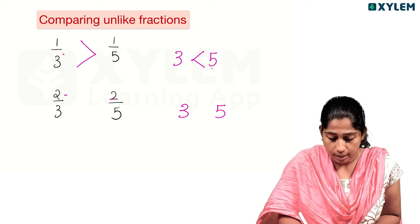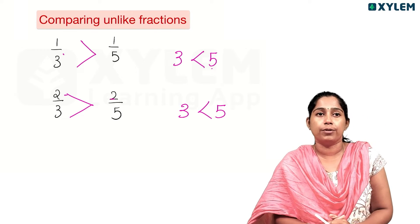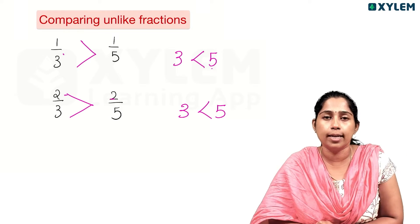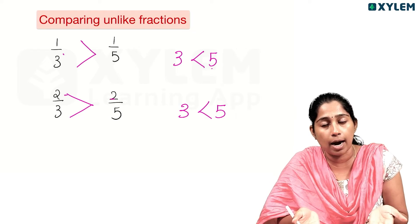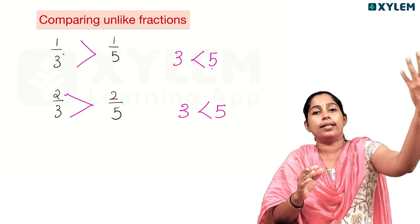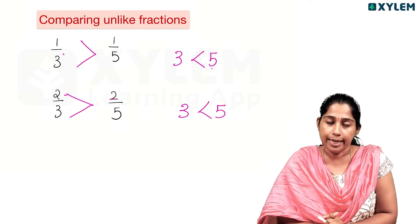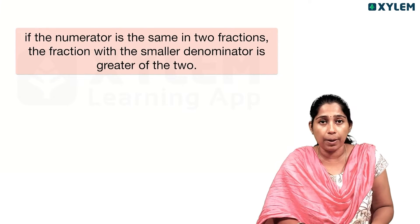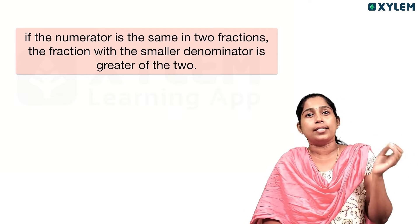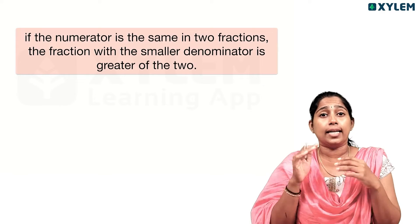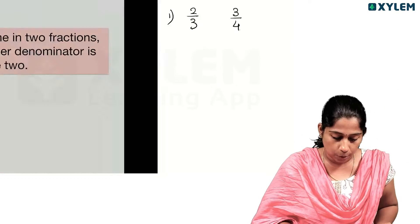2 by 3 is bigger than 2 by 5 because the denominator 5 is larger than 3. If the numerator is the same in two fractions, the fraction with the smaller denominator is greater.